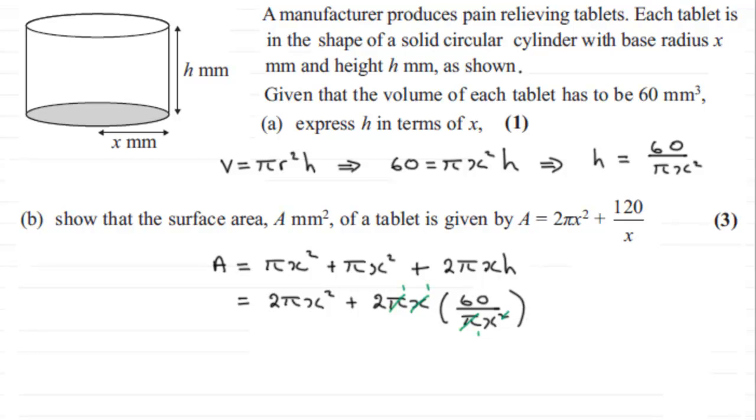So therefore, we end up with this equaling 2πx² plus 2 times 60, which is 120, and that's all divided by this remaining x here. Okay, so hope you're able to follow that if that caused any problems.